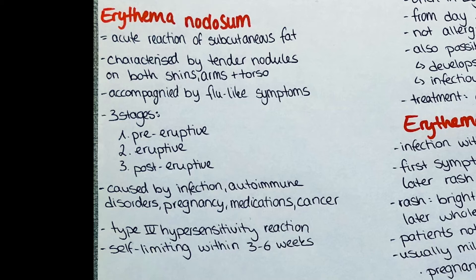The disorder is caused by a range of different conditions, which include streptococcal infections, primary tuberculosis, mycoplasma pneumoniae, Epstein-Barr virus, autoimmune disorders like inflammatory bowel disease or sarcoidosis, pregnancy, different medications among which are sulfonamides and penicillin, as well as the hepatitis B vaccine. Some cancers can also cause erythema nodosum. It is thought to be a delayed type of hypersensitivity reaction, so type 4, to a specific antigen.